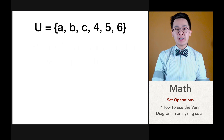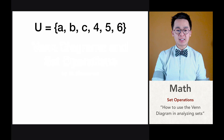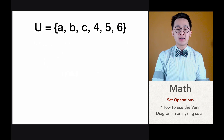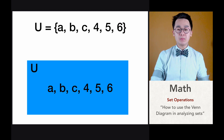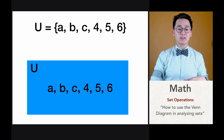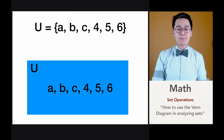Let's say we have set U which is our union set and it's composed of A, B, C and 4, 5, 6. We can draw a diagram enclosed inside a rectangle and this will be our union set.